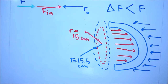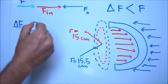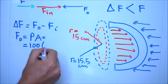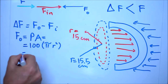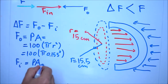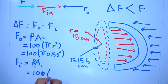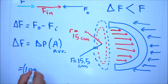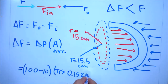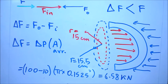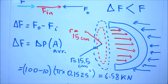Delta F equals F out minus F in. F out is the outer pressure (100 kilopascal) multiplied by pi R squared, and the inner force is the inner pressure (10 kilopascal) multiplied by the inner area. Another way to calculate delta F is by multiplying delta P by average area: delta P is 100 kilopascal minus 10 kilopascal, times pi r squared for the average radius of 15.5 centimeter. The force needed should be larger than 6.58 kilonewton.